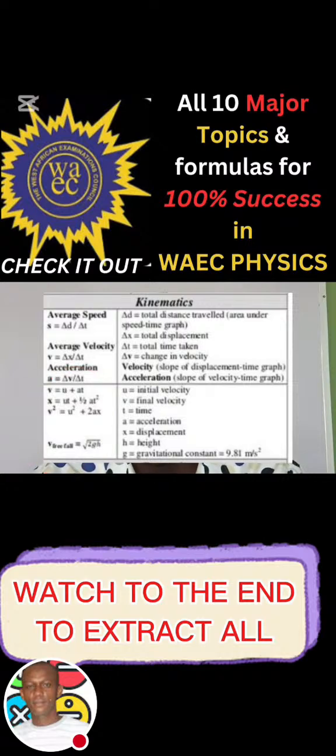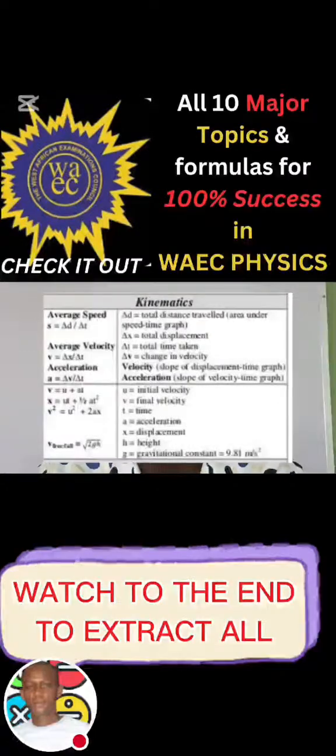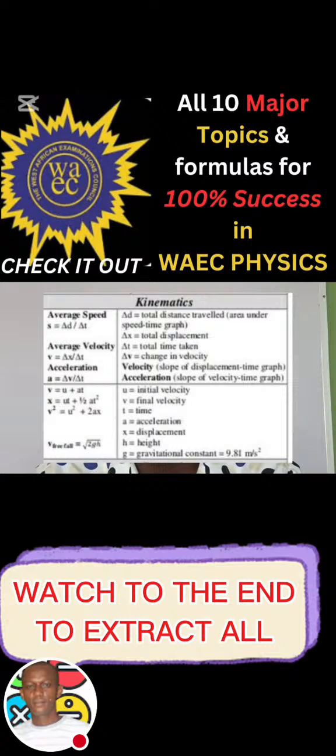Now we also have the equation of motion. We have v is equal to u plus at; x is equal to ut plus half at squared; v squared is equal to u squared plus 2ax; and we also have v, the velocity of the free falling body, which is equal to the root of 2gh. The meaning of all the parameters: u is the initial velocity, v is final velocity, t is the time, a is acceleration, x means displacement, h means height, and g is the gravitational constant which is always 9.81 or 10. If you are not given, we take it as 10, but if you are given, that's 9.81.